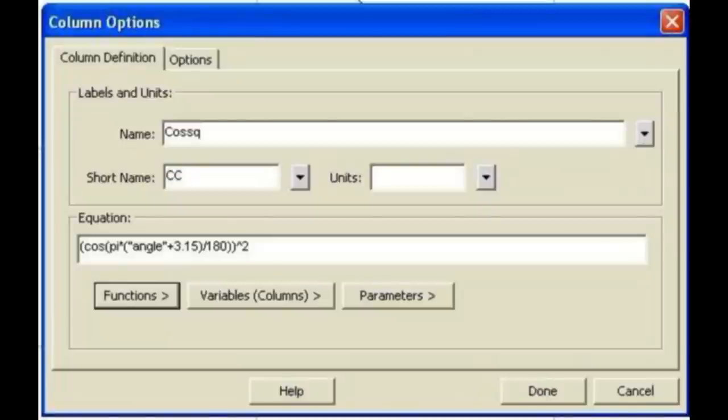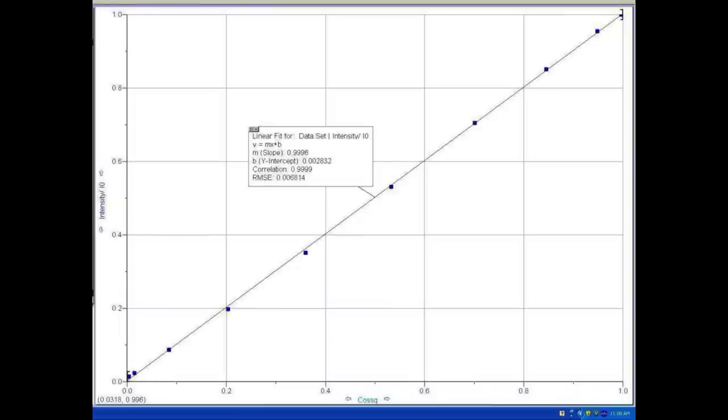These results can be linearized if you plot intensity versus the squared cosine of the radian angle. The angle offset found above should be included, or the plot will not be a straight line. In this case, the correction amounted to adding the 3.15 degree offset to every angle. The plot of intensity versus cosine squared should be a straight line with a slope of one. You will have shown from this result that the intensity of the light depends on the square of the electric field amplitude.